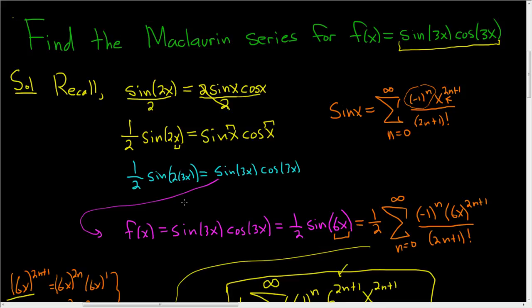Normally when you see a problem like this, you always want to think about identities because doing this using just this formula and the one for cosine and then multiplying is very, very challenging. I hope this helps.